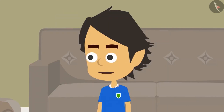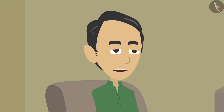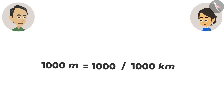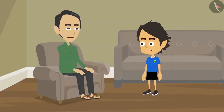But if we are given a value in meters, how will we convert it into kilometers? Very easy. To convert meters into kilometers, divide by 1000. For example, if 1000 meters is to be converted into kilometers, divide by 1000. The answer will be 1 kilometer. Got it.